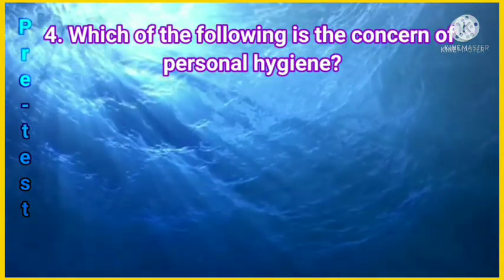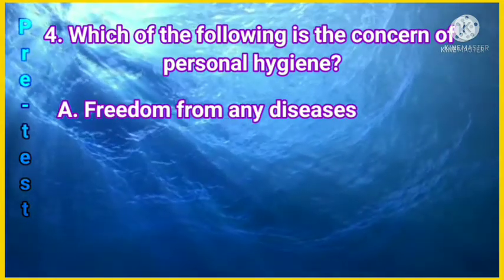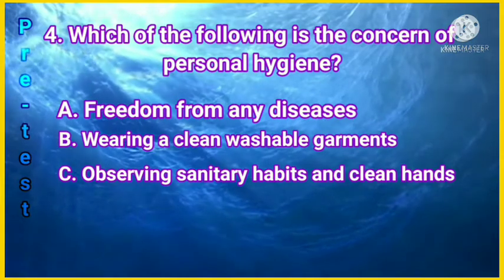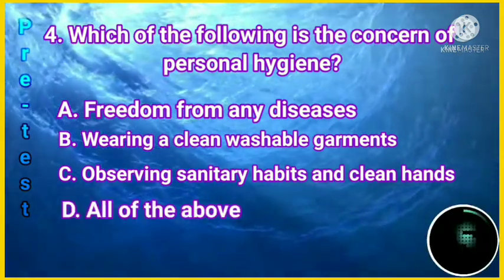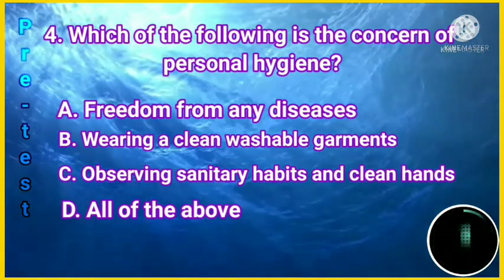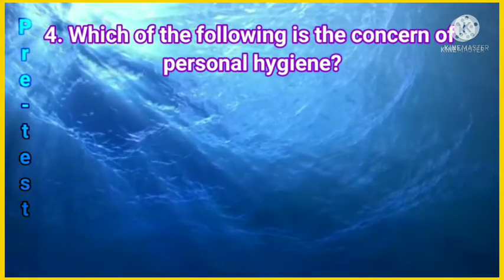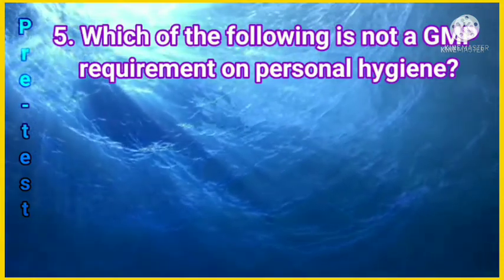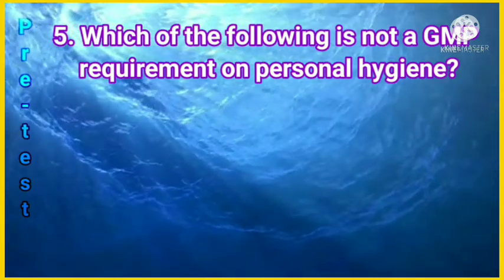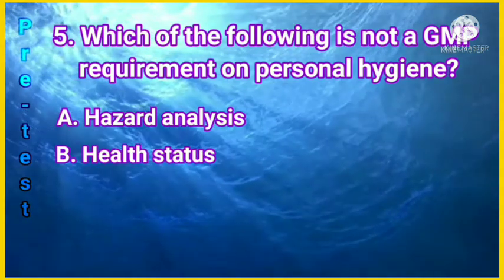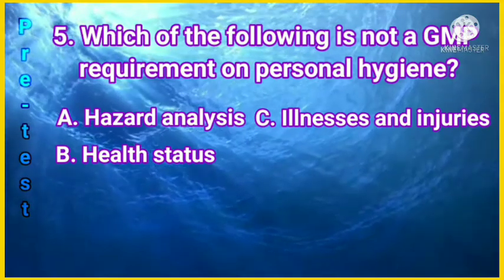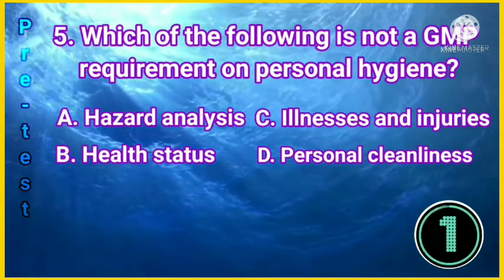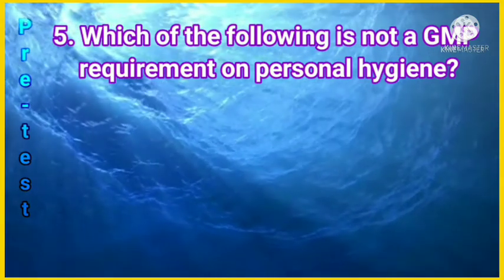Question 4: Which of the following is the concern of personal hygiene? A. Freedom from any diseases. B. Wearing clean washable garments. C. Observing sanitary habits and clean hands. D. All of the above. If your answer is letter D, wonderful — you are indeed correct. Last item. Question 5: Which of the following is NOT a GMP requirement on personal hygiene? A. Hazard analysis. B. Health status. C. Illnesses and injuries. D. Personal cleanliness. The answer is letter A.